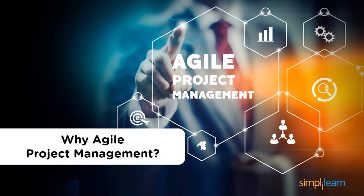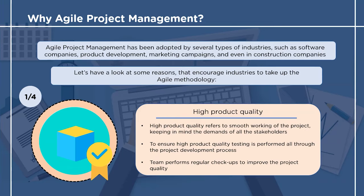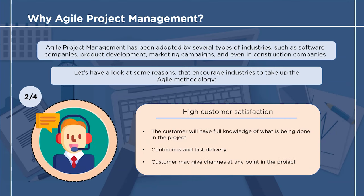Let's now have a look at some reasons why industries have started moving towards agile project management. The first reason is high product quality. When we talk about high product quality we refer to the build of the product as per stakeholders' demands. Testing is performed at short intervals of time wherever needed to ensure high quality of the product.